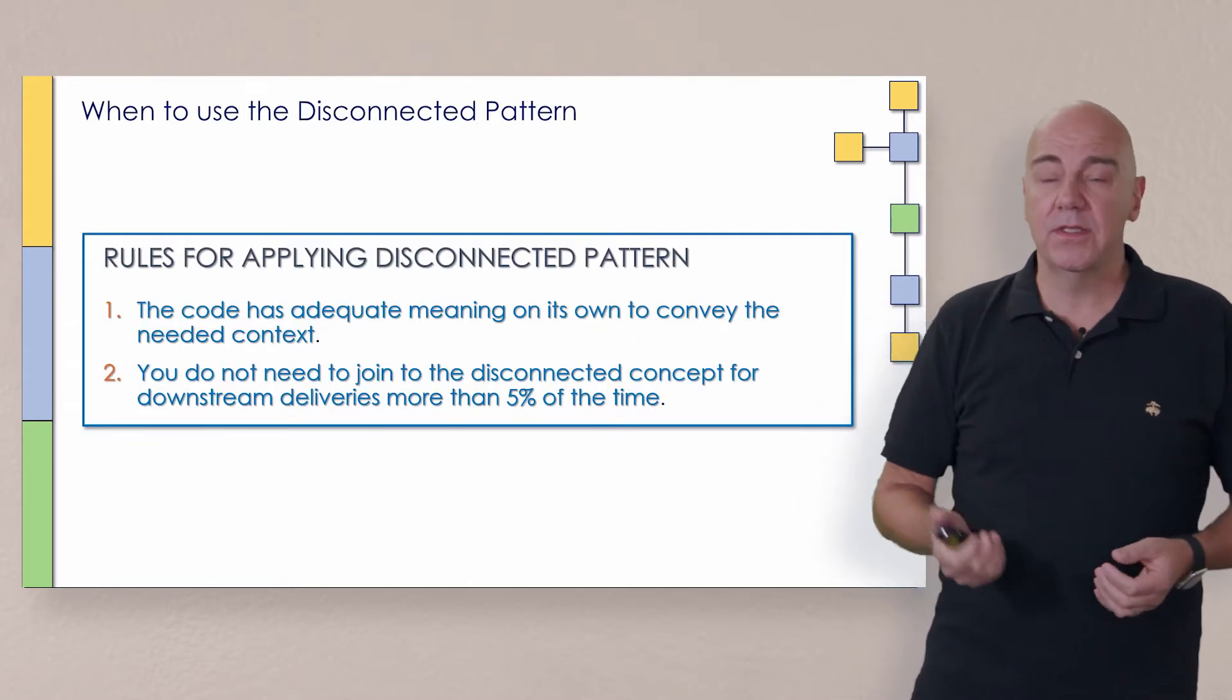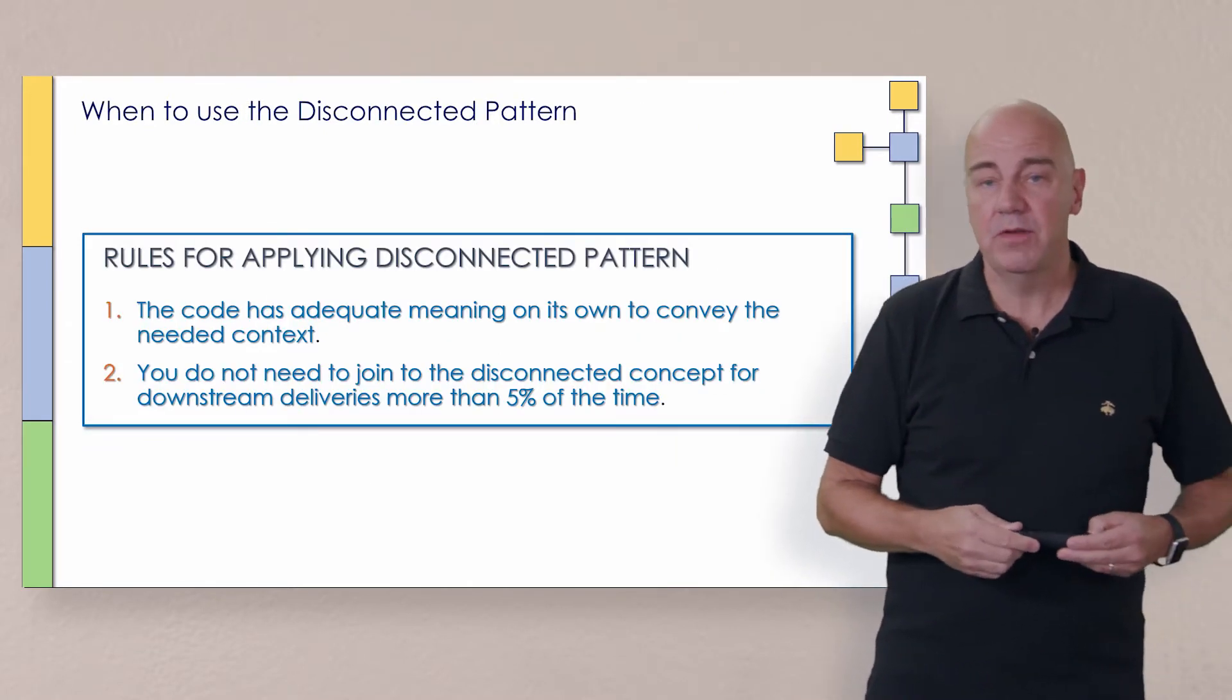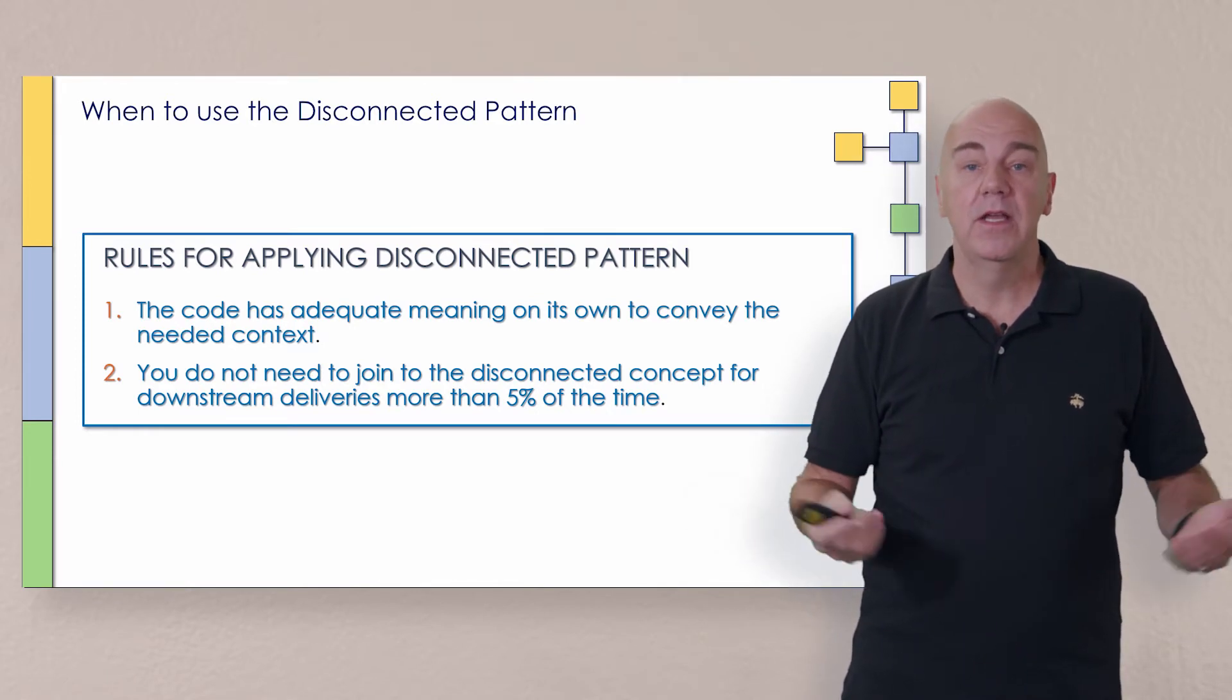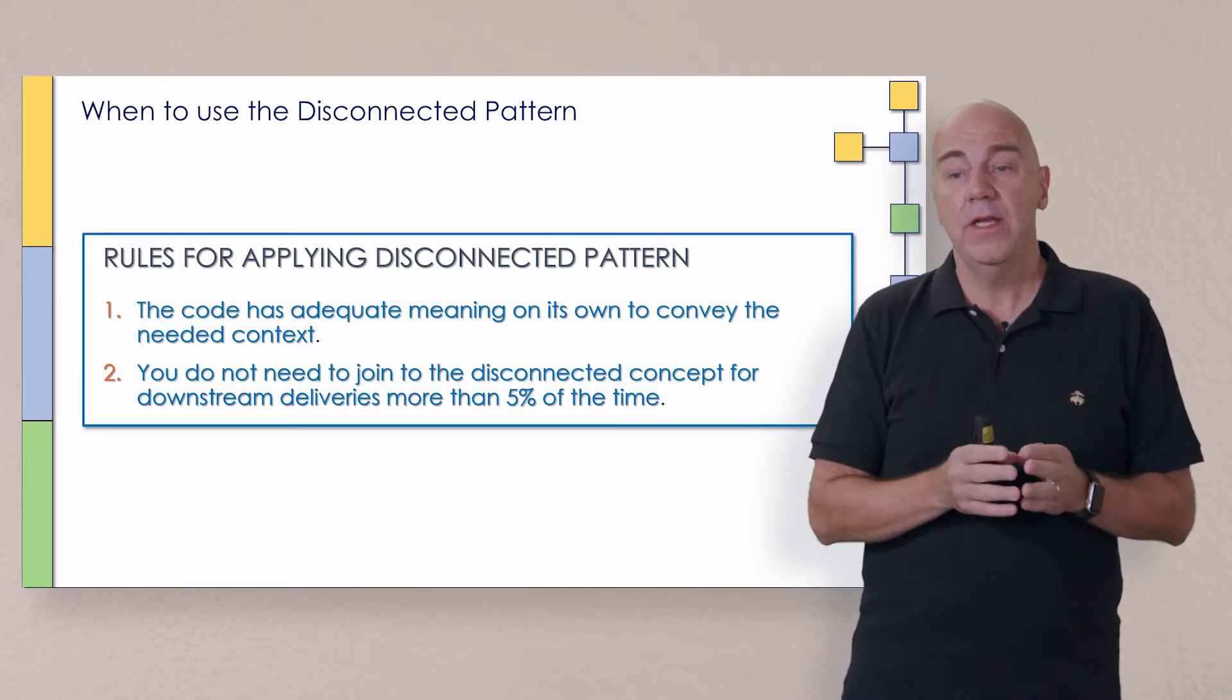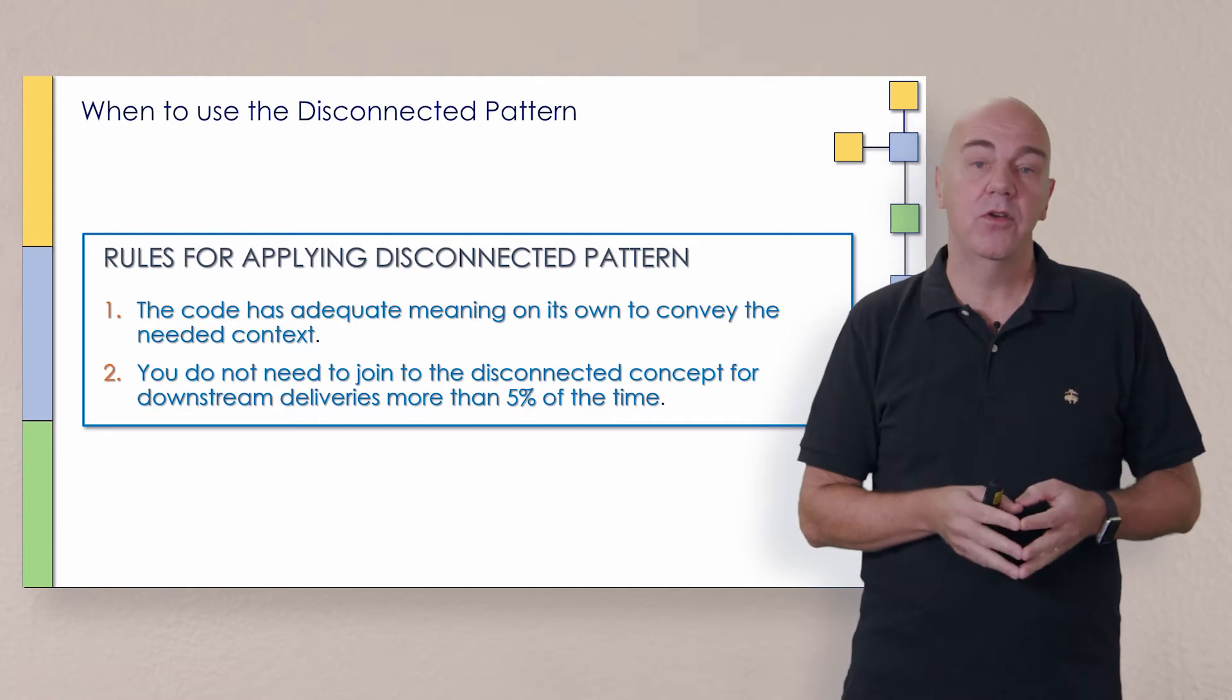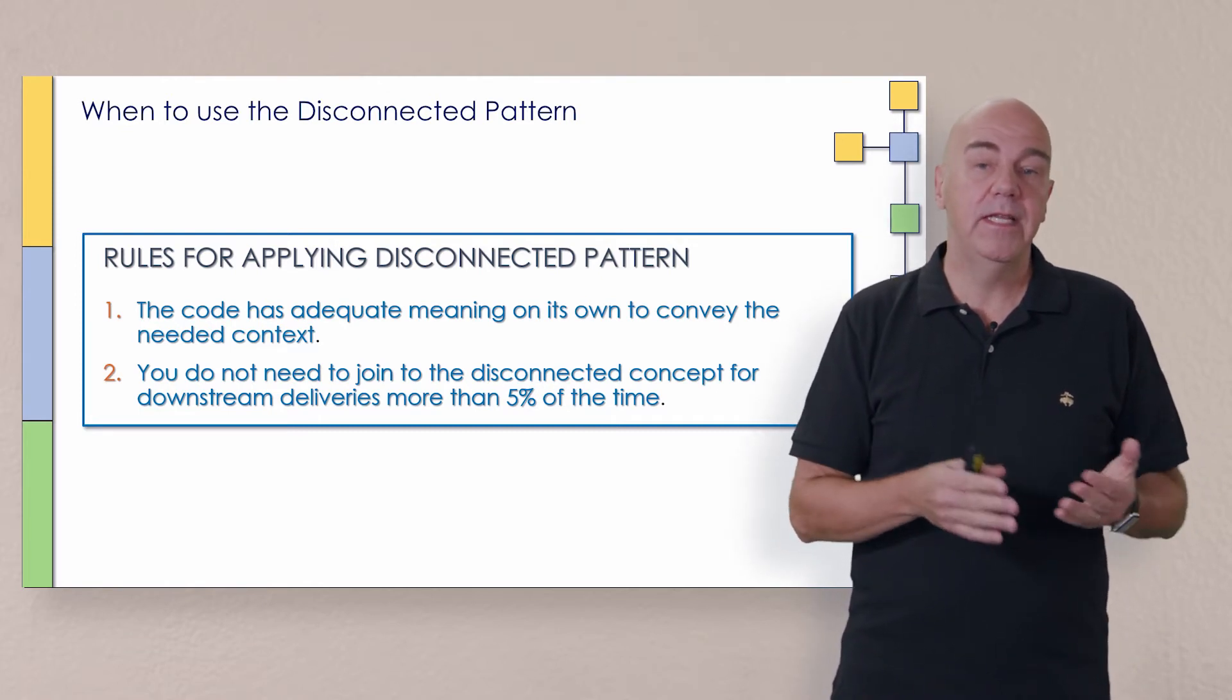So when can I use the disconnected pattern? Well, it's pretty straightforward, actually, because there's just two rules here. And one of them is that the code has adequate meaning on its own to convey the needed context.